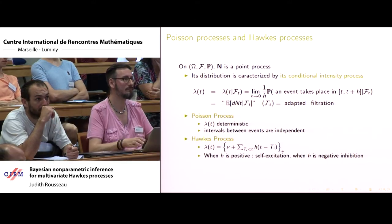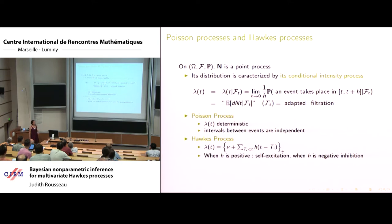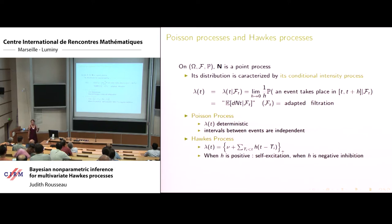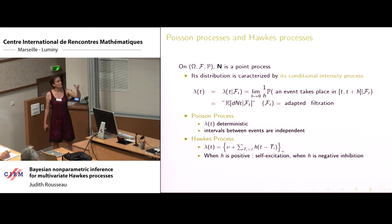Point processes look at events and times of events through time — just through time, not space point processes. One of the key characteristics of point processes are the conditional intensity functions, essentially the expectation of the instantaneous number of spikes fired at a given time, given the past. F_t is the adapted filtration, essentially the past. The most well-known is the Poisson process, where lambda_t is deterministic. When constant, it's the homogeneous Poisson process. A key characteristic is that intervals between event times are independent random variables.